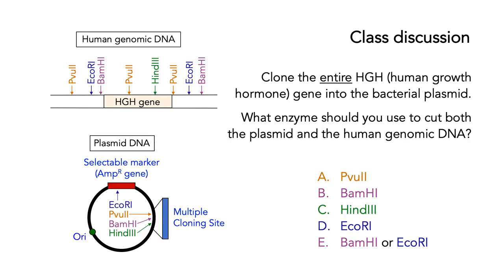Here's a class discussion. We've got two different bits of DNA: on the top, human genomic DNA containing the HGH — human growth hormone — gene, and on the bottom, a plasmid vector with a selectable marker, an origin of replication, and multiple cloning sites. We want to clone the entire human growth hormone gene into the bacterial plasmid. Which enzyme should we use to cut both the plasmid and the human genomic DNA? Stop the video, think about this for a moment, and then restart.